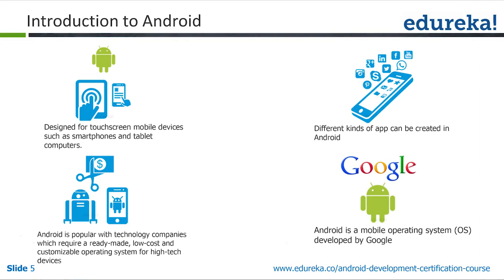Android is designed for touchscreen mobile devices such as smartphones and tablets. Android was developed by Android Inc., originally by Andy Rubin, who was the author of Android and created that organization. Later, Google saw the potential and acquired Android Inc., making Andy Rubin VP of the Android development team. Now Google maintains all things about Android — launching newer versions and maintaining the operating system.